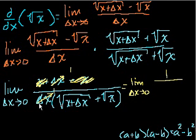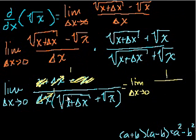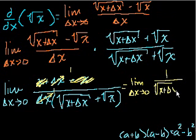We can only do this assuming — well, we're dividing by Δx to begin with, so we know it's not 0, it's just approaching 0. So we get 1 over √(x + Δx) plus √x.